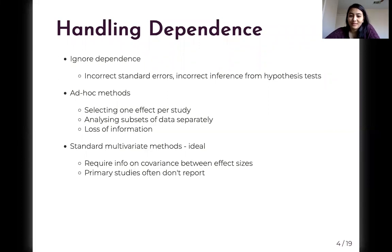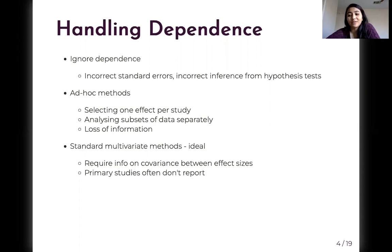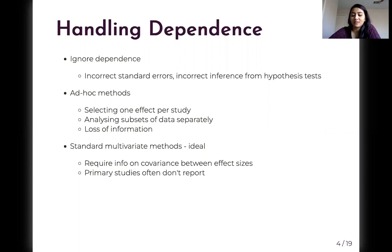There are several ways to handle dependence. One is to ignore dependence, but doing so can result in incorrect standard errors and incorrect inferences from hypothesis tests. Some ad hoc methods include selecting one effect size randomly per study or analyzing subsets of data separately; however, such methods result in loss of information. The ideal way is to use multivariate models, but doing so requires information on covariances or correlations between effect sizes, which are really hard to obtain from primary studies.